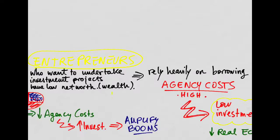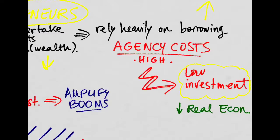And thus, since they have very little of their own wealth, they have to rely heavily on borrowing. Now, the fact that they're going to borrow a lot is going to mean that they're going to have to be monitored a lot, which is usually known as agency costs.